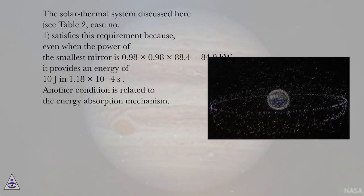The solar thermal system discussed here, see Table 2, case number 1, satisfies this requirement because even when the power of the smallest mirror is 0.98 times 0.98 times 0.98 times 88.4 equals 84.9 kilowatts, it provides an energy of 10 joules in 1.18 times 10 to the negative 4 seconds. Another condition is related to the energy absorption mechanism.